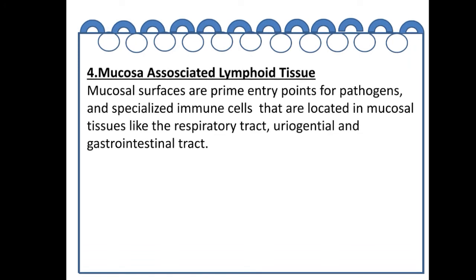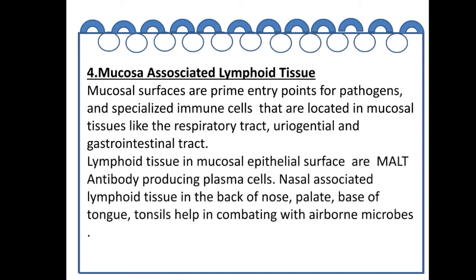Mucosa-associated lymphoid tissue (MALT) surfaces are prime entry points for pathogens, and specialized immune cells are located in mucosal tissues like the respiratory tract, urogenital tract, and gastrointestinal tract. Lymphoid tissue in mucosal epithelial surfaces are MALT. Nasal-associated lymphoid tissues are found in the back of the nose, palate, base of tongue, and tonsils, helping combat airborne microbes and providing immunity against them.